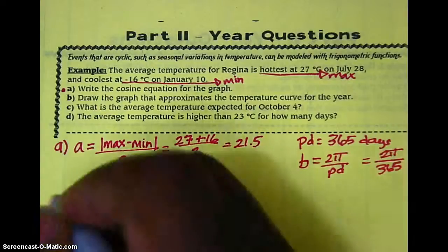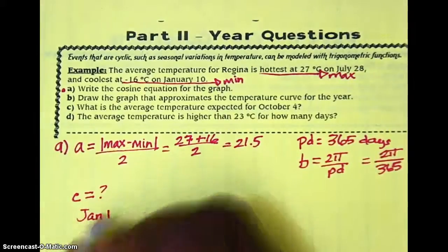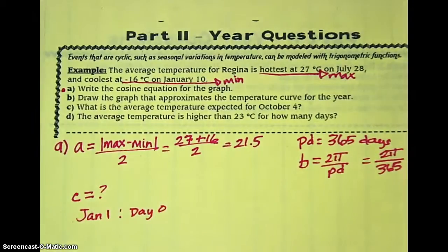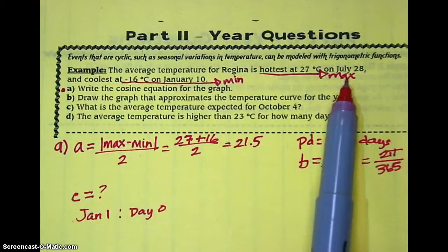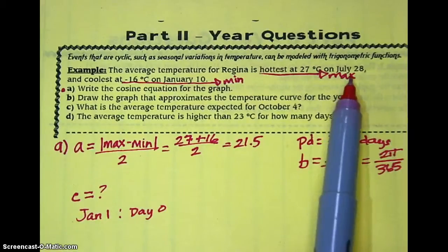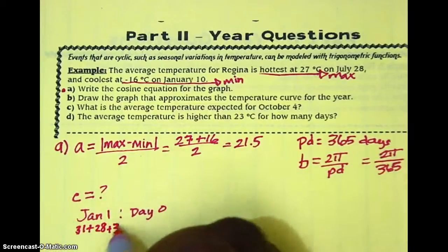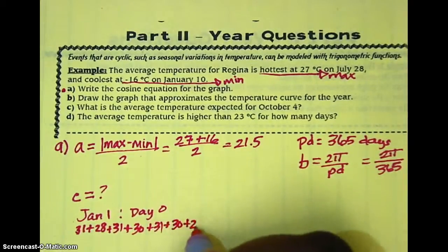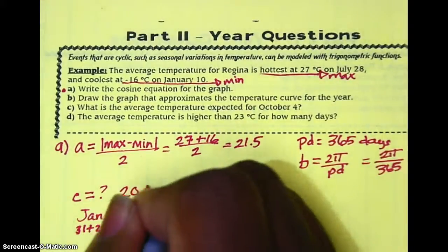Next, we need the value of the phase shift. The year begins on January 1st, so in terms of how many days have passed, we're going to let January 1st represent day 0. We have to count from January 1st to July 28th, which is where we reach the maximum on the cosine graph. Adding up the days: January 31, February 28, March 31, April 30, May 31, June 30, and then 28 days for July — we get a value of 209. So our value for C is 209.